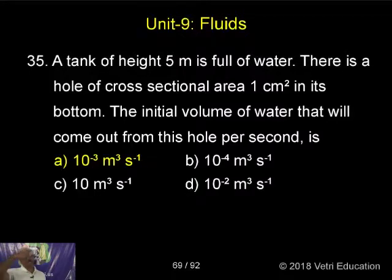A tank of height 5 meters is full of water. There is a hole of cross-sectional area 1 cm² in its bottom. The initial volume of water that will come out from this hole per second is.